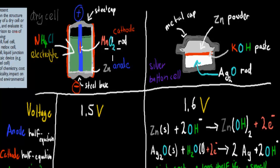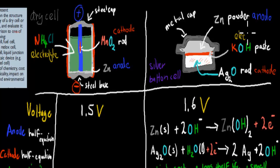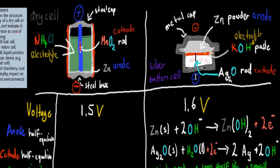For the button cell — a silver button cell — the cathode is the silver oxide paste or rod. That is where reduction occurs; these gain electrons. The anode is zinc powder, where oxidation occurs and electrons are lost. Electrons flow from the zinc to the silver. The electrolyte is potassium hydroxide paste (KOH). We have a positive terminal and a negative terminal, with electrons flowing from negative to positive.